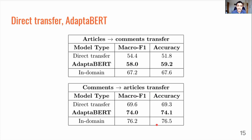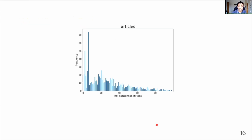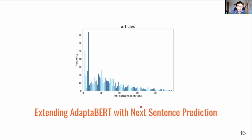AdapterBERT only adds an MLM stage, and MLM only attunes BERT embeddings to word-level context and not necessarily sentence-level context. Looking at our dataset, a lot of news articles have a lot of sentences — a significant proportion have 40 or even 60 plus sentences, and on average each article has around 30 sentences. For this reason we propose extending AdapterBERT with a next sentence prediction (NSP) stage to help AdapterBERT capture cross-sentence context in the target domain, with the hypothesis that this will help when articles is the target domain.